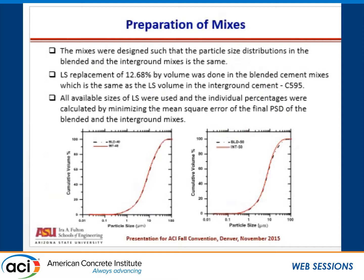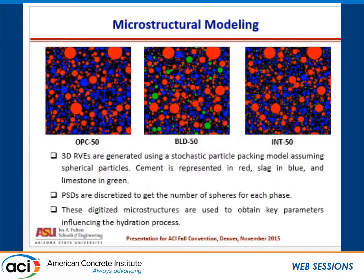We have blended cements, we have the interground cements, and we have binary OPC and slag mixtures. We designed the mixes such that the particle size distribution of the composite distribution is similar to that of the interground distribution. Limestone in all the blended compositions was 12.68%, which is the same amount of limestone present in C595. We use all the available limestone sizes and optimize the particle size distribution so that the final particle size distribution of the blended and the interground mixture is the same.